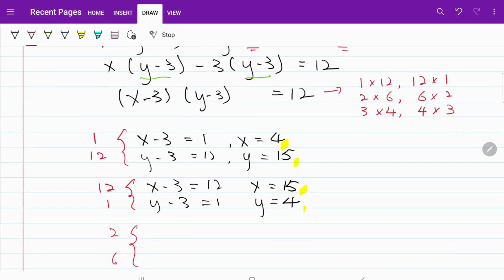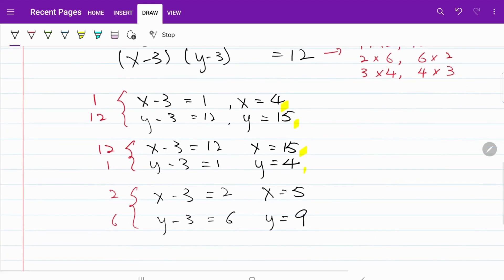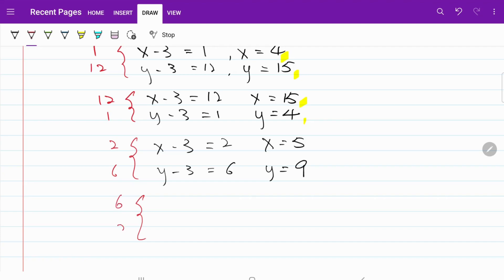2 and 6. x minus 3 equal to 2, x is equal to 5. y minus 3 equal to 6, y is equal to 9. Let's try the reverse. x minus 3 equal to 6, x is equal to 9. y minus 3 equals to 2, y is equal to 5. There you have it, our second combination. x equal to 5, y equal to 9, or x equal to 9, y equal to 5.